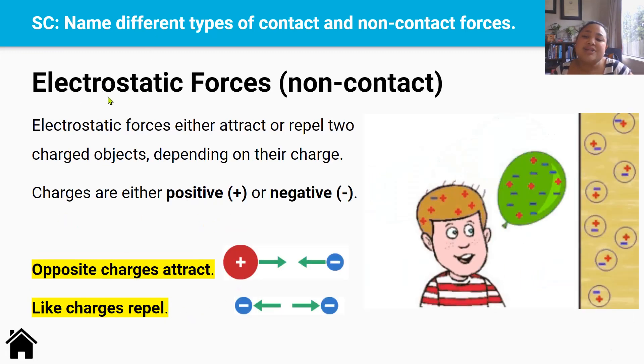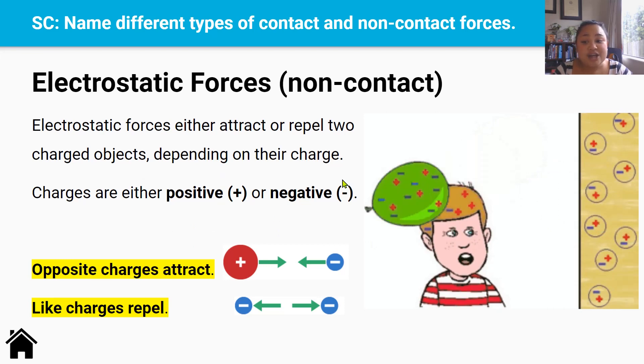Finally, we've got electrostatic force, which is our third non-contact force example. Electrostatic forces either attract or repel two charged objects. So charge means they're either positive or negative, depending on their charge. If it's opposite, the charges attract. If it's like, like same same, the charges repel from each other. So opposite of plus is minus, and so they attract each other. But if you've got two minuses, they repel each other.